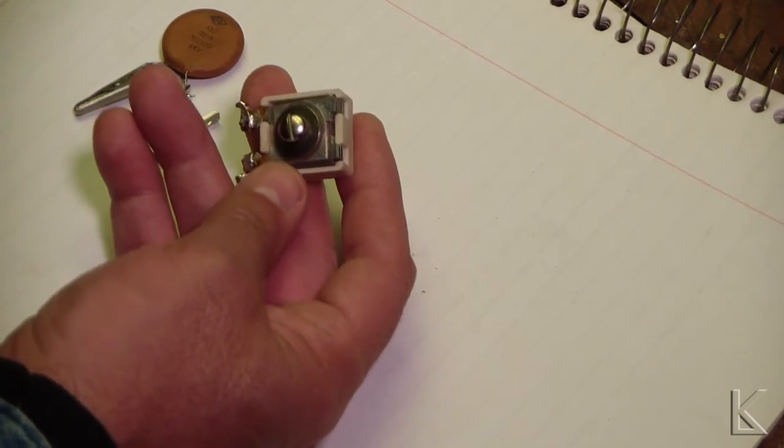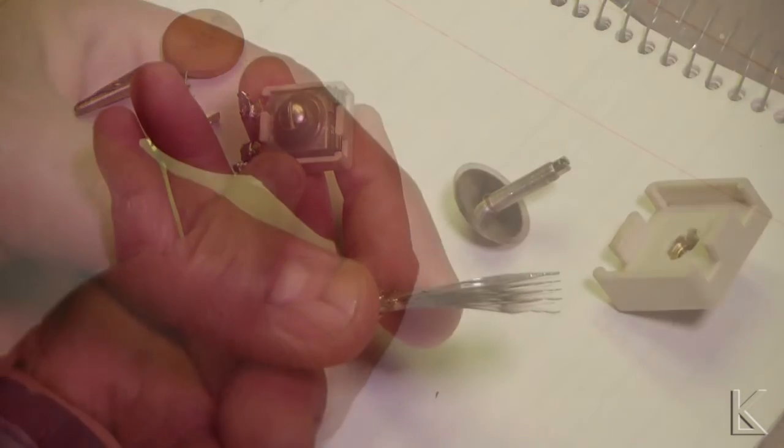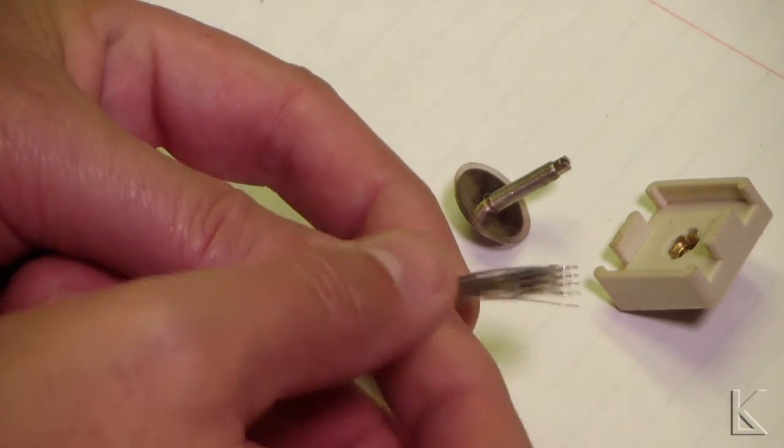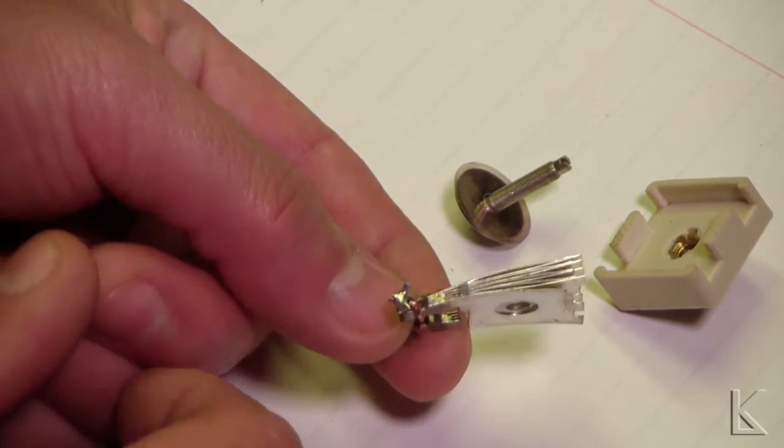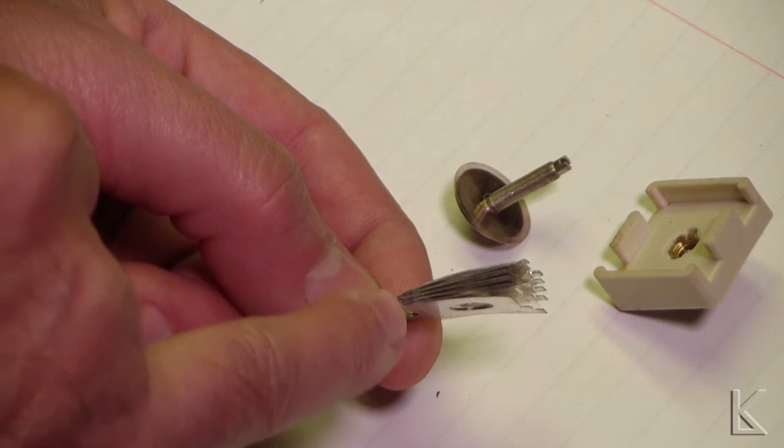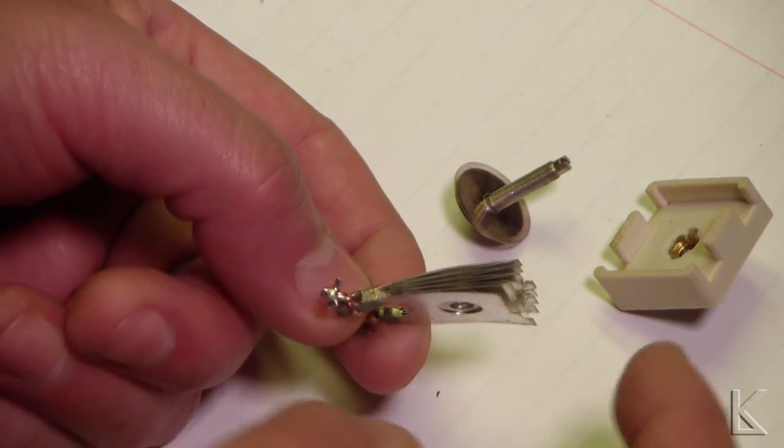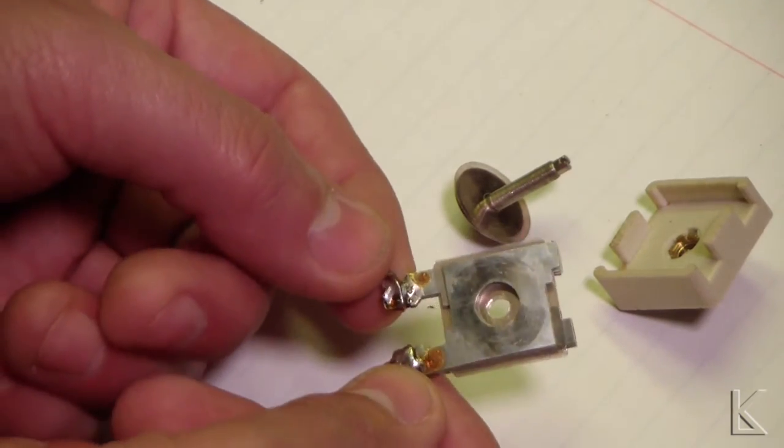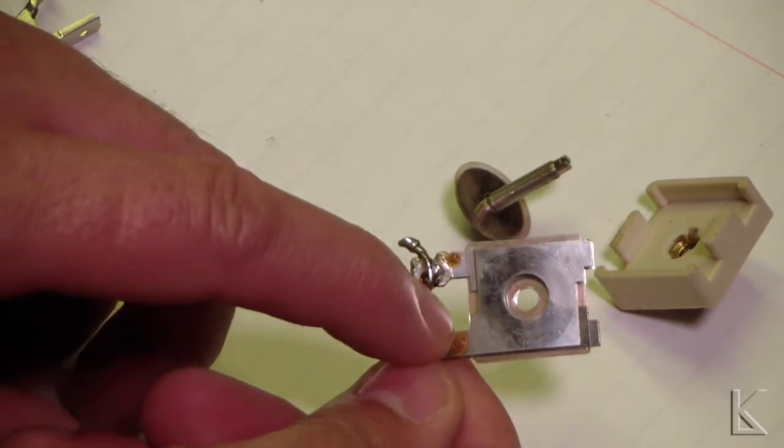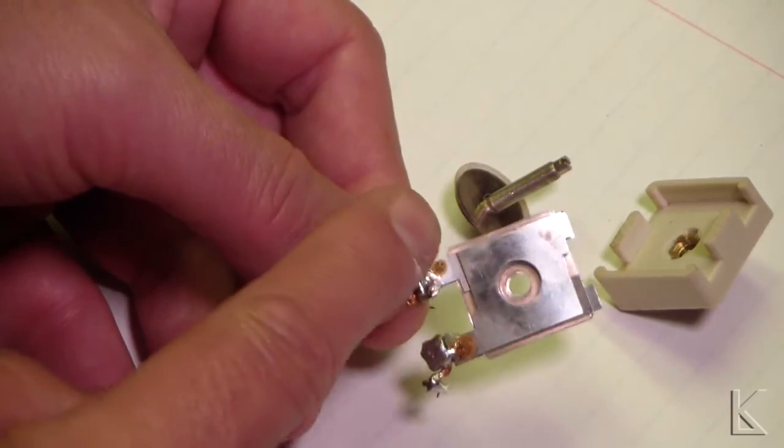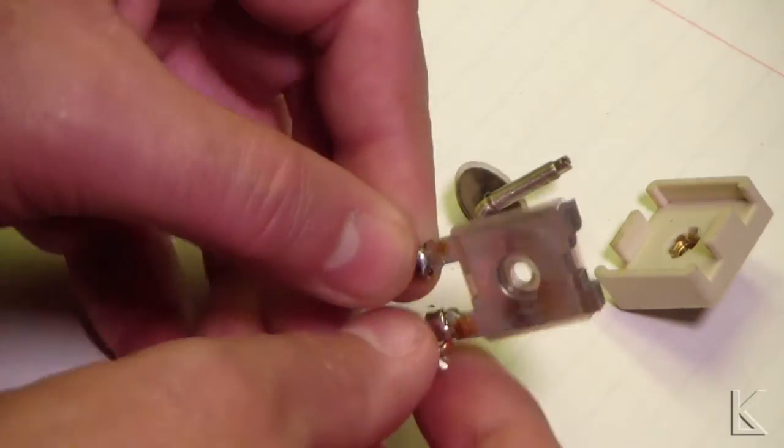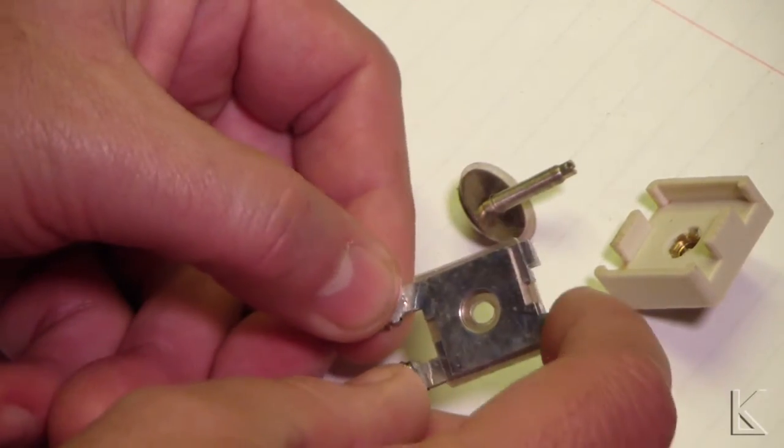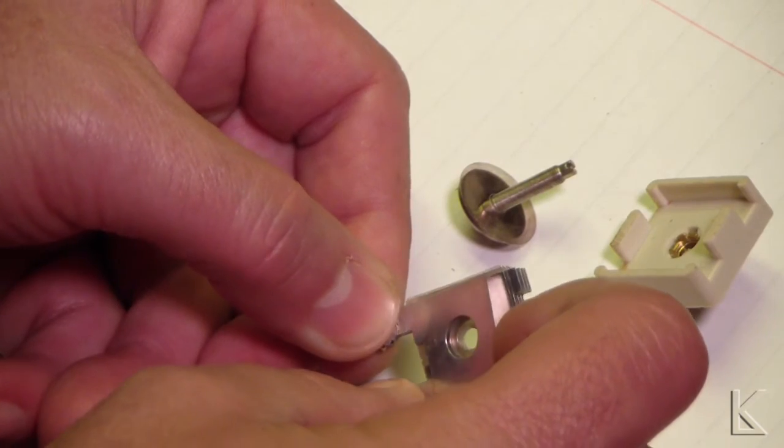This is what the inside of the capacitor looks like - it's a plate stack. Each of the plates are all connected down here and there's mica insulators between them. There's two sets - a set of plates here and a set of plates here, and they alternate.